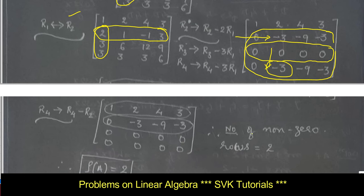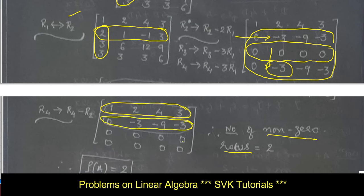The rank is nothing but the number of non-zero rows. You are required to find out the number of non-zero rows. Here, the first row is non-zero and the second row is non-zero. Therefore, the rank of this matrix is 2. This is the procedure for solving rank — compulsorily, one problem will be there on rank.